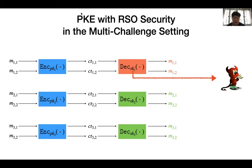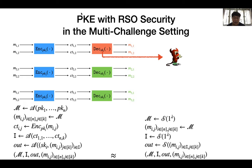In this setting, each public key will be used to generate multiple ciphertexts. Formally, for the definition of RSO Security in the multi-channel setting, the adversary will receive multiple ciphertexts for each public key, and the security still requires that the output of the adversary can be simulated by a simulator that only takes as input the messages sent to the corrupted receivers. That's the definition of RSO Security in the multi-channel setting. And now, we are ready to present our main results.